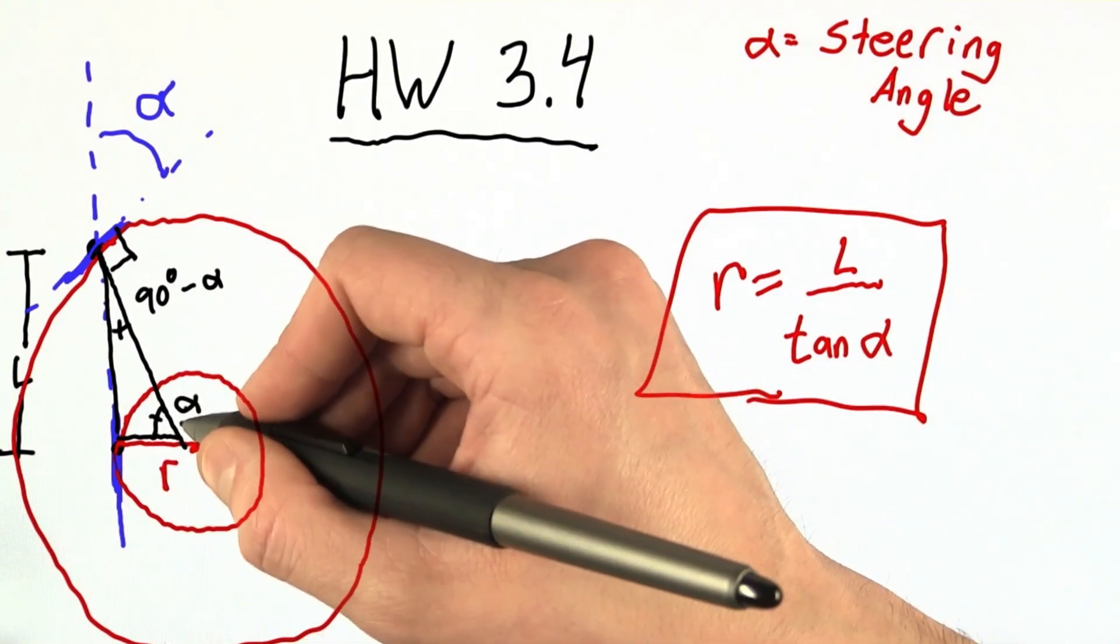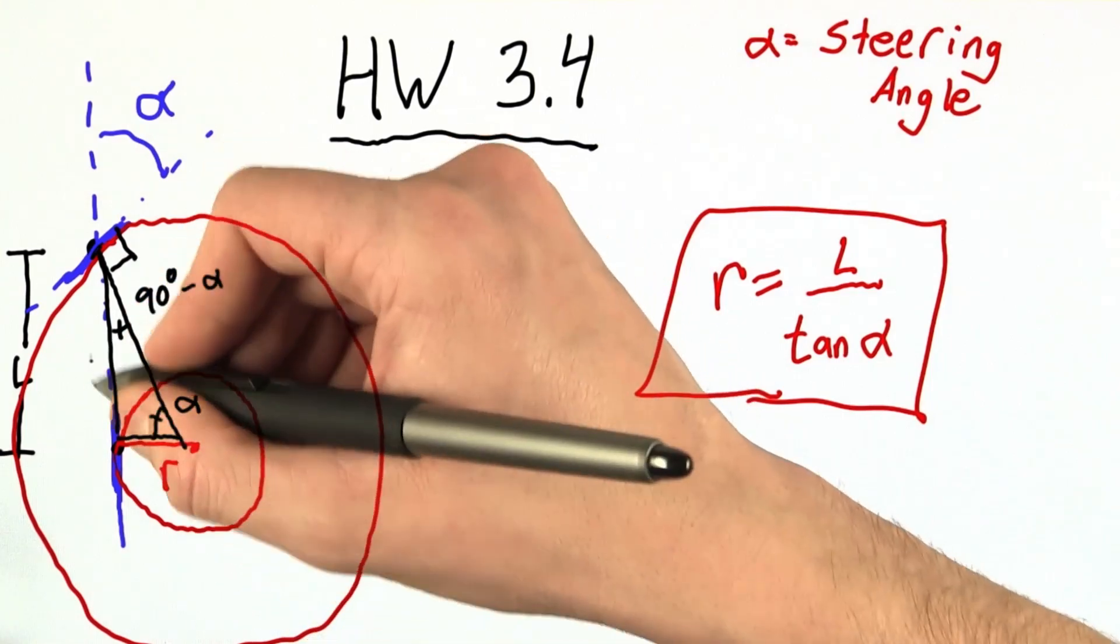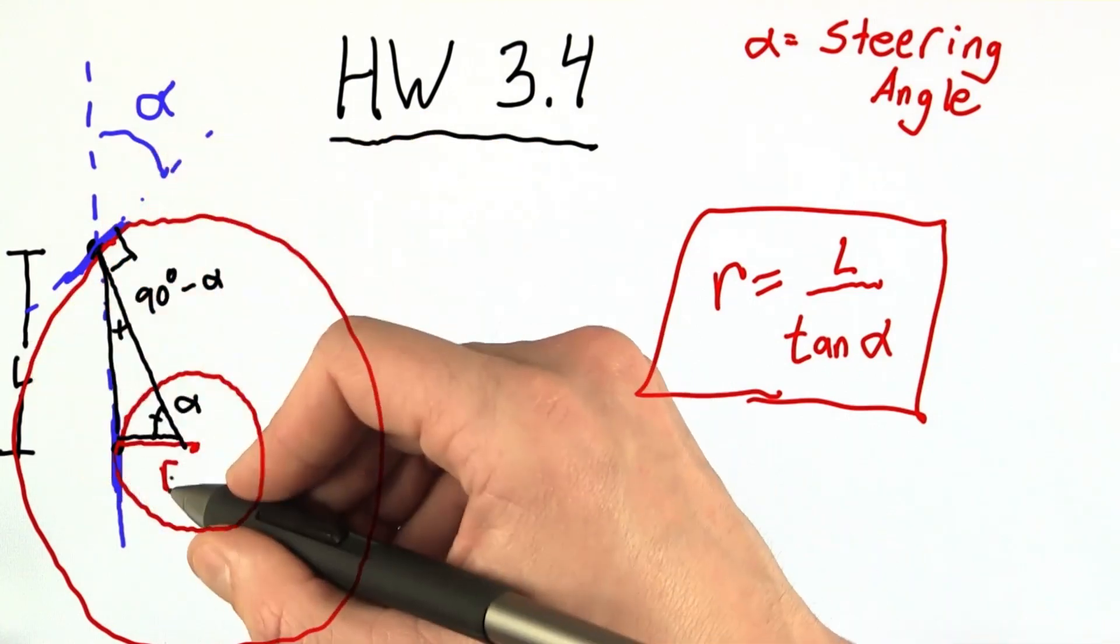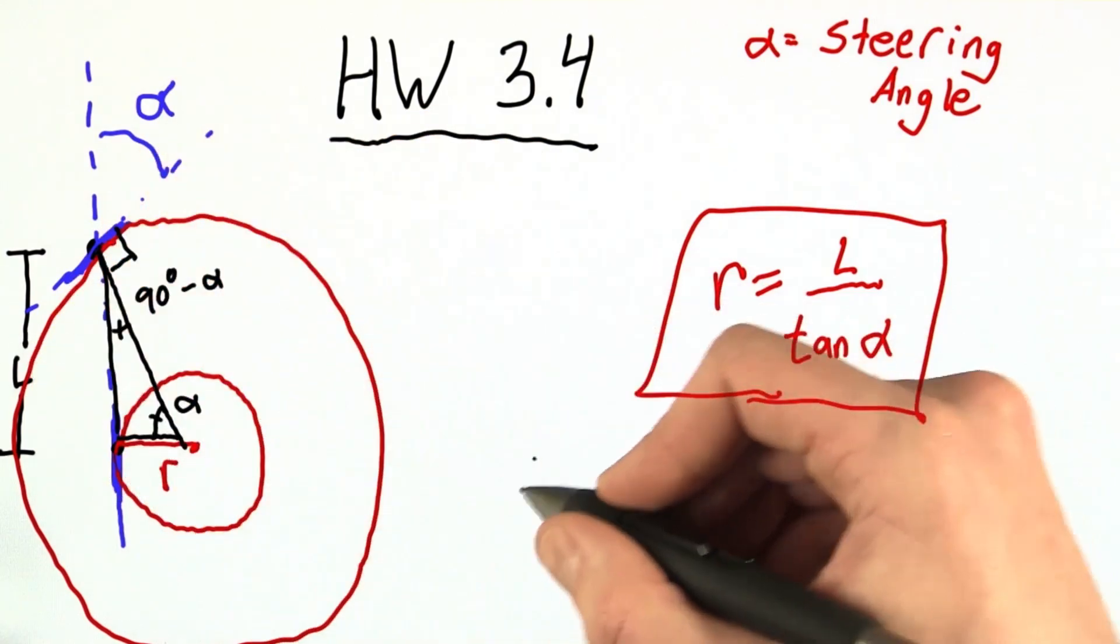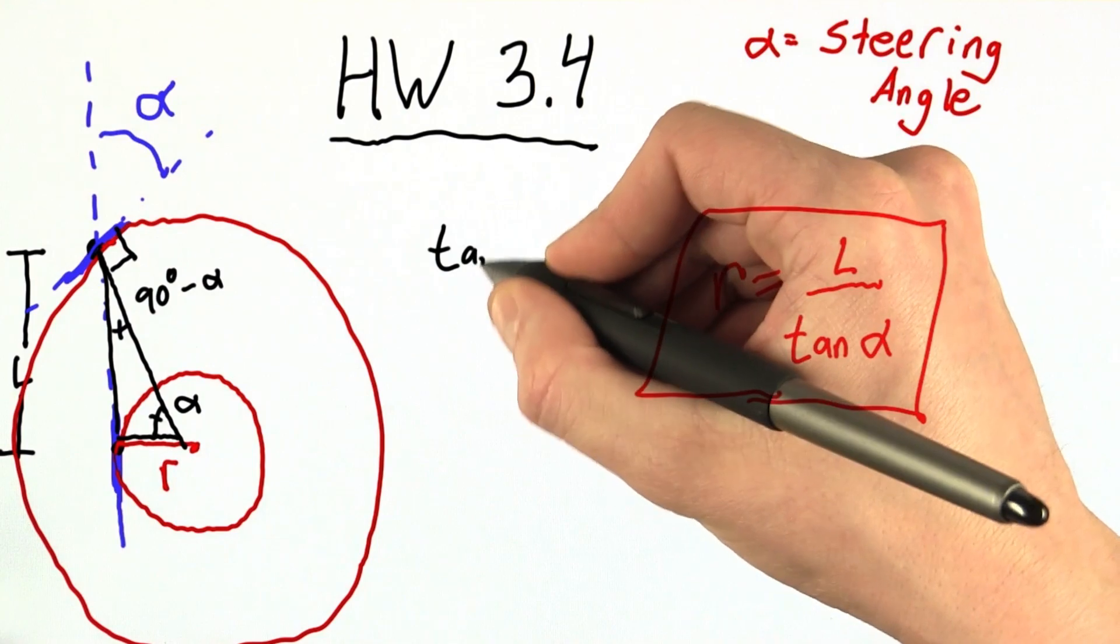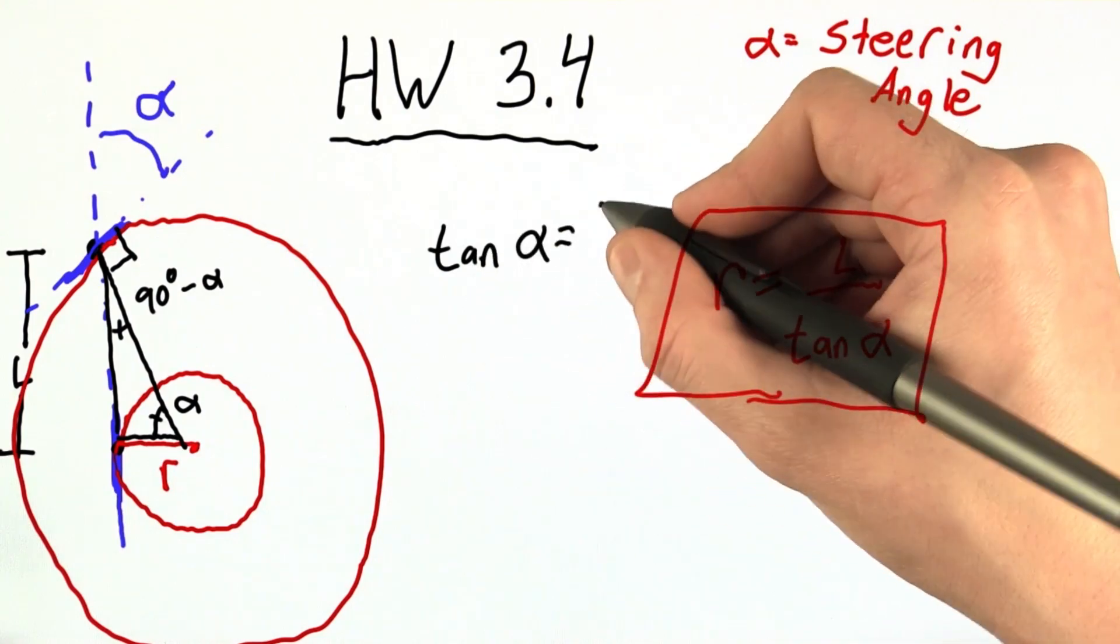Well, we're almost there. The tangent of this angle is equal to the opposite side, which is the length, over the adjacent side, which is the radius. So tangent of alpha is equal to L over R.